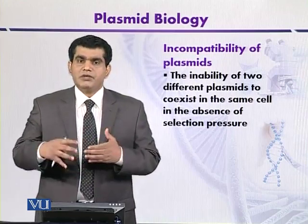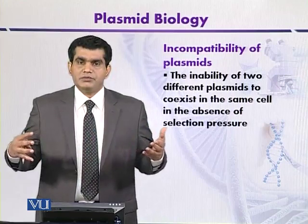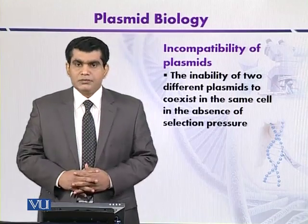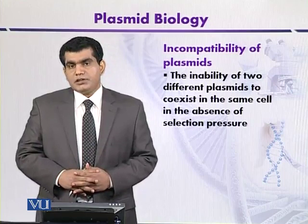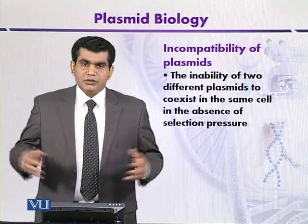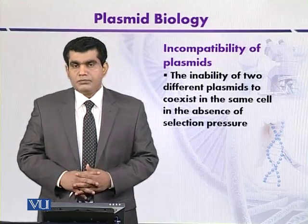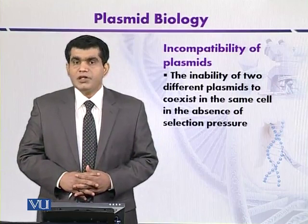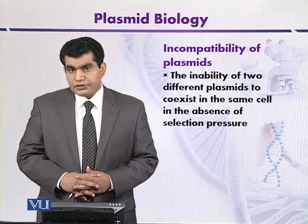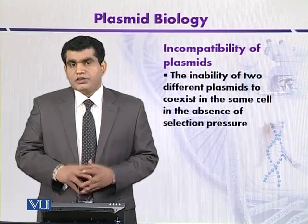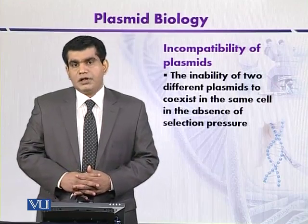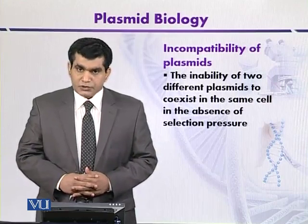If we take the example of gram-negative host organisms like E. coli, 30 incompatibility groups are there. And similarly, for Staphylococcus aureus, around 13 incompatibility groups have been reported.